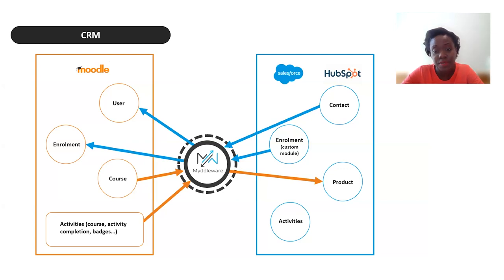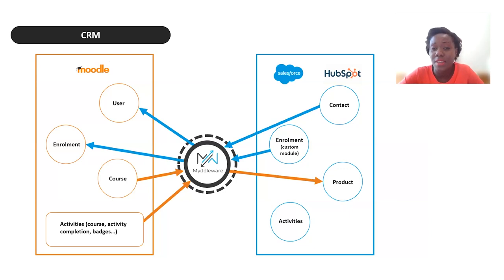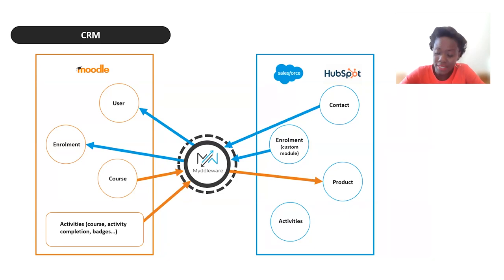This is made possible through web service technology, and you can get more information on that at the end of the presentation. This means that if you have an academic admin or any student relationship manager — people who are in touch with students on a daily basis — they don't need access to Moodle to track student activities. Every piece of information they need will be automatically synchronized into the CRM.